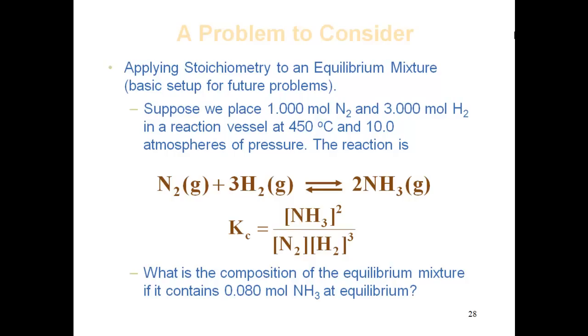So the actual question in this problem is: what is the composition of the equilibrium mixture if it contains 0.080 moles of ammonia at equilibrium? So this problem tells us the initial moles of nitrogen and of hydrogen.